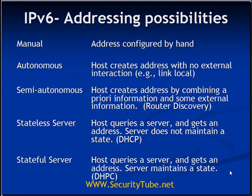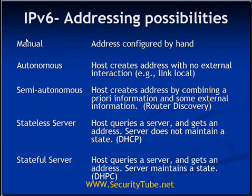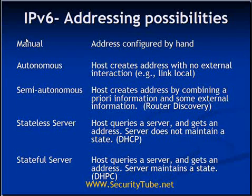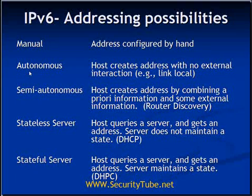In IPv4, there were only two possibilities of addressing. The first was manual or hand-configured — with the help of the ifconfig command in Linux we can give the IP address, or in Windows, if we go to the properties section of a network connection we can give the IPv4 static address. The second possibility was with the help of DHCP, or Dynamic Host Configuration Protocol, where the DHCP server gives a proper IP address from its pool.